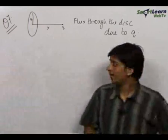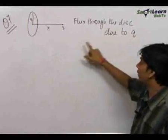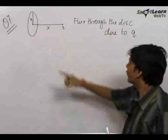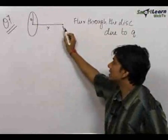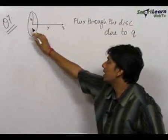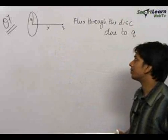The seventh question: we need to find out the flux through a disk of radius r when a charge q is kept on its axis at a distance x perpendicular to the disk.